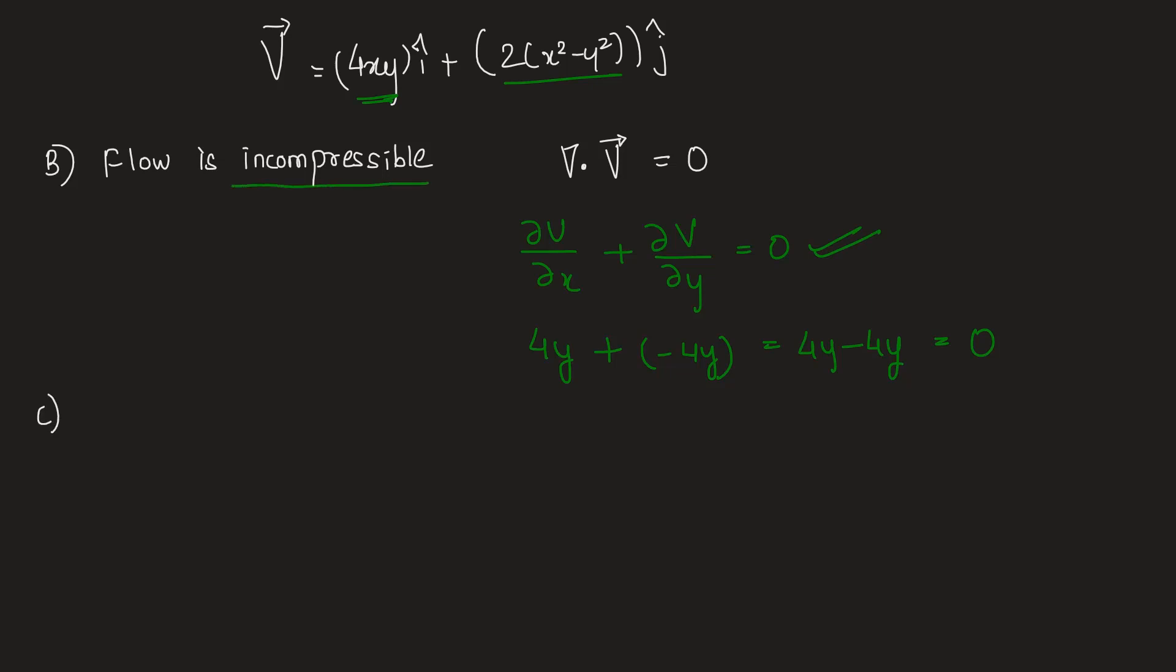Now let's check option C: flow is irrotational. To check whether this flow is irrotational, we need to find out the angular velocity in the direction perpendicular to the xy plane. Angular velocity in z direction has to be found out, which should come out to be zero in order for the flow to be irrotational.